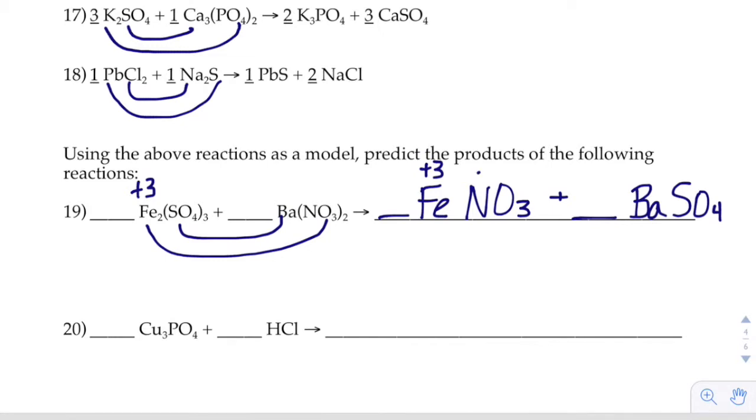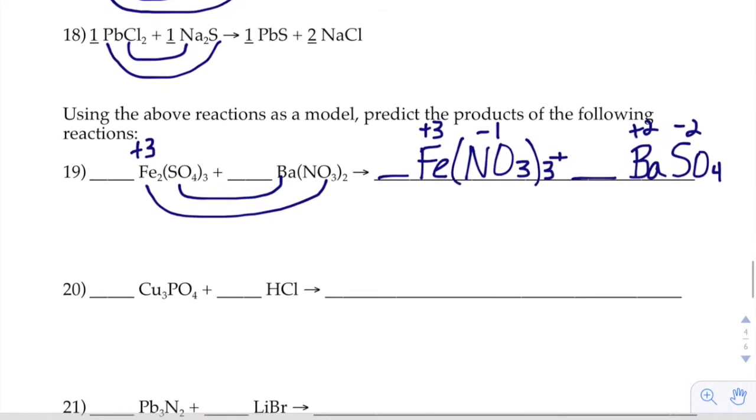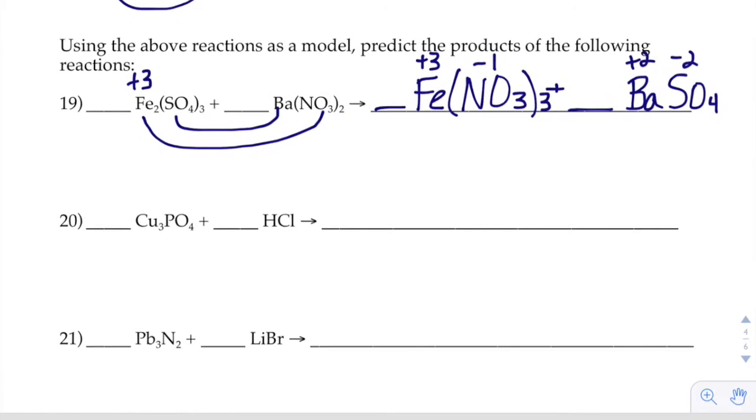And then our nitrate is NO3 with a minus 1. So, it has to look like this, right? Fe(NO3)3. Our barium with sulfate, barium's plus 2, sulfate's minus 2. So, it's just good as BaSO4.